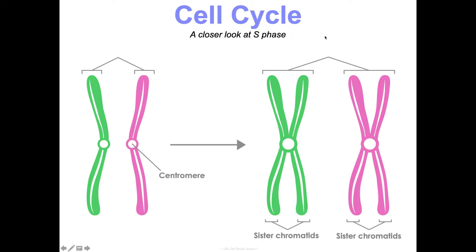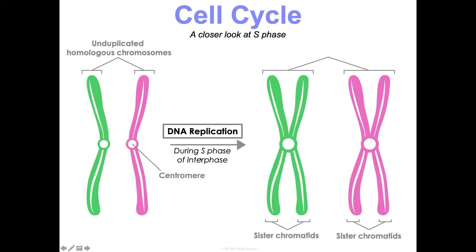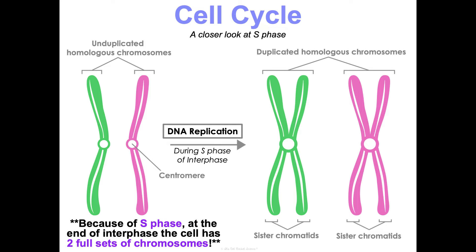Before S phase, you have 46 unduplicated chromosomes, or 23 pairs of homologous chromosomes. During S phase, DNA replication doubles these — notice how they look like X's now. The two identical copies are called sister chromatids. Together, I would refer to this as a duplicated homologous chromosome pair. At the end of interphase, we should have two copies of every chromosome — two full sets, so 92 individual copies — that will then divide into 46 in each cell.